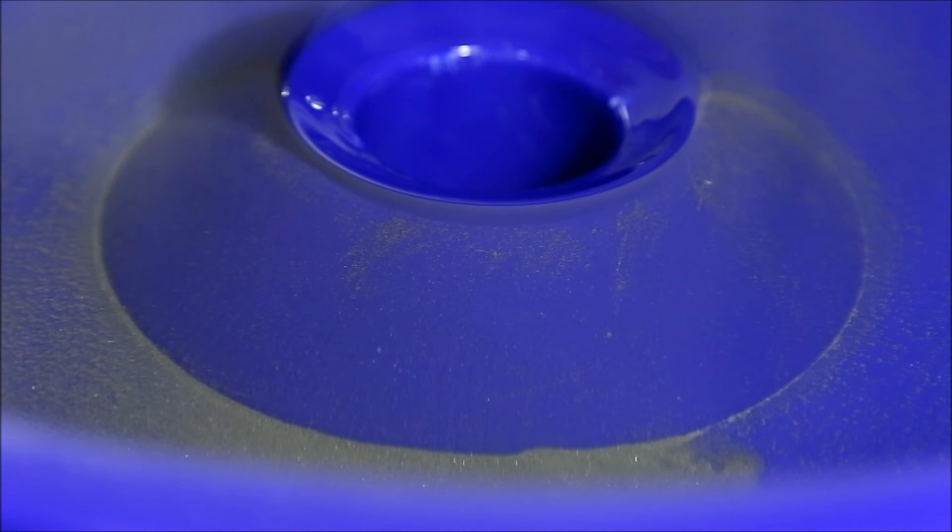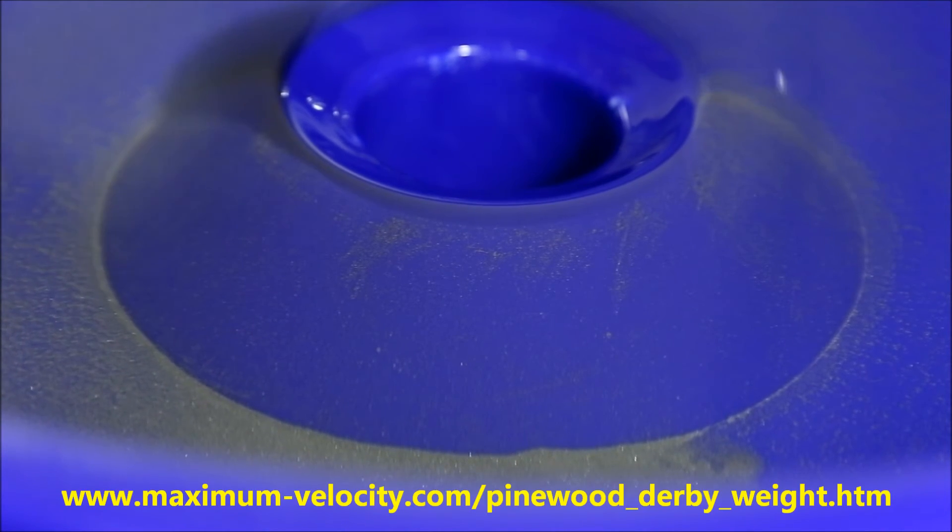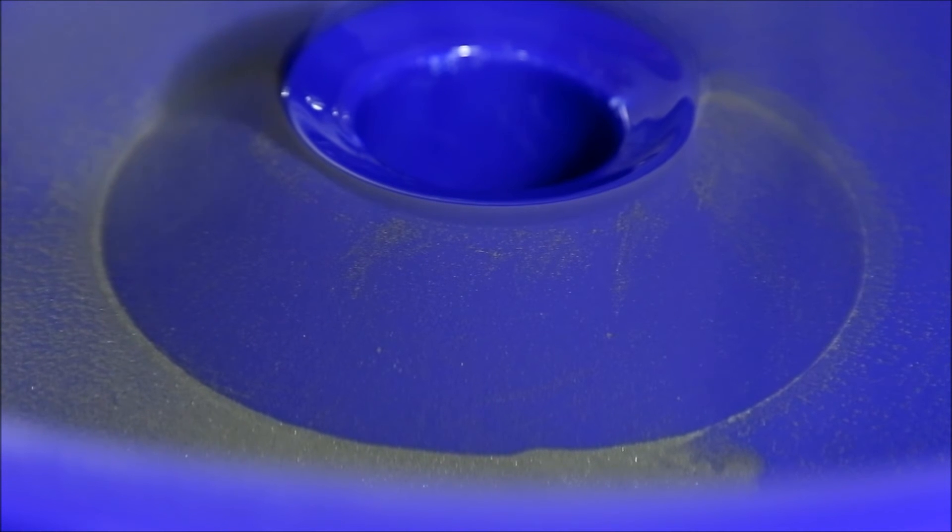Now, powdered tungsten is available for, believe it or not, weighting Pinewood Derby cars. The easiest source is a website called Maximum Velocity. You can get three ounces of this for less than $10. This powdered tungsten is less than minus 100 mesh, it's very fine, so it will behave as your finest gold will behave, which is what Miller tables are really good at collecting.